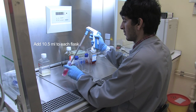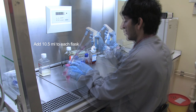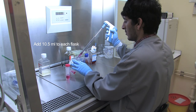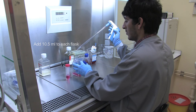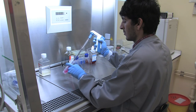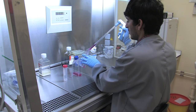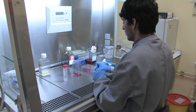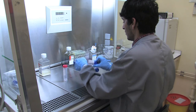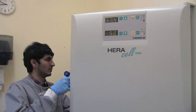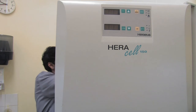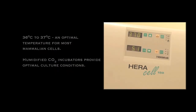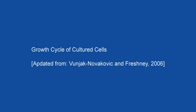The suspension is then distributed equally into two cell culture flasks. The flasks are then placed in the incubator for cell growth. The flask caps should be loosened to allow gaseous exchange. Growth cycle of cultured cells.